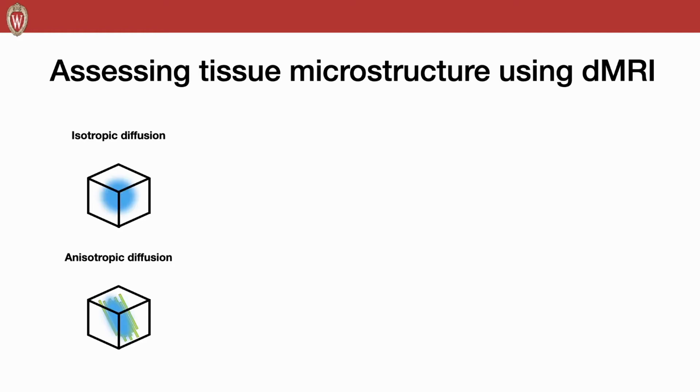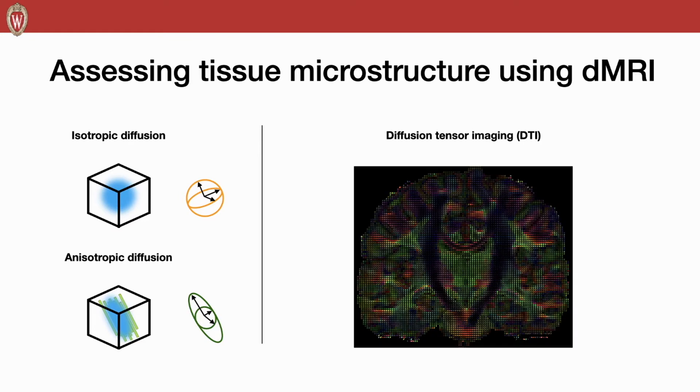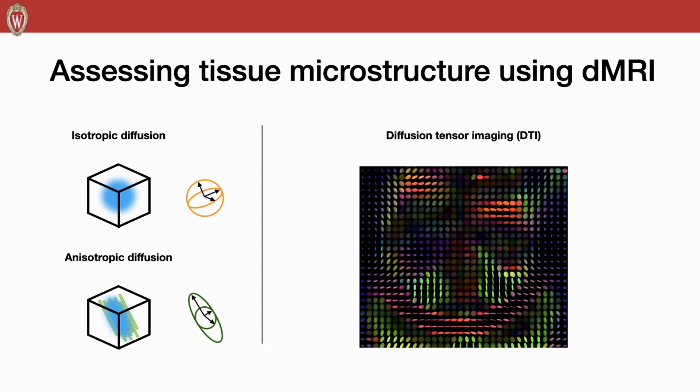If there's no fiber bundles around that spatial location, the water molecules can diffuse freely. However, if there's a fiber bundle around, the water molecules can mainly diffuse along that fiber direction. We can use a Gaussian distribution to fit that diffusion pattern, where the covariance metrics represent the diffusion direction. If we measure all the locations inside the brain, we can get the diffusion tensor imaging, called DTI.